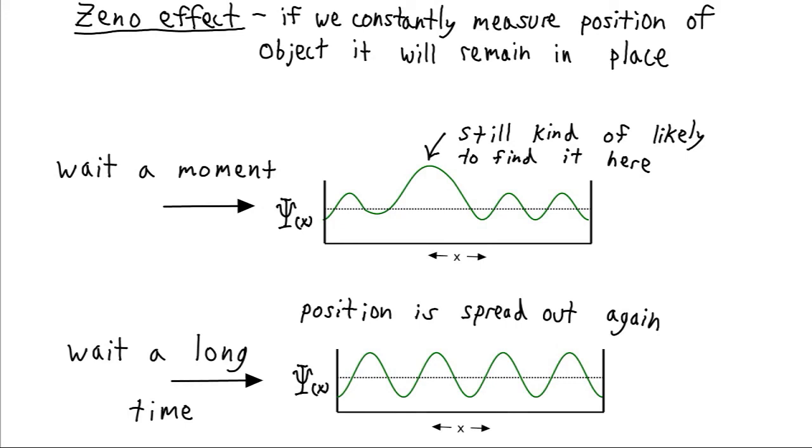And now there's an equal probability of finding the electron here or here or here or here. And it's back to not having what we would think of as position.